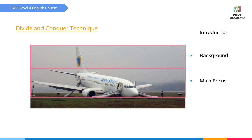Then we look at the background. In the background, we can talk about the weather — is it sunny, rainy, or foggy? Also, you can look at the area and terrain — mountains, forests, and city. We may also talk about nearby buildings, hangars, or towers in the background.